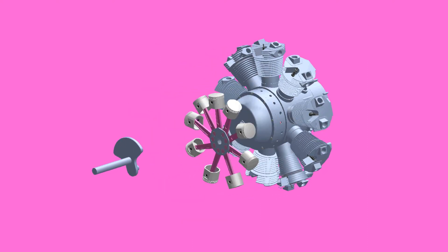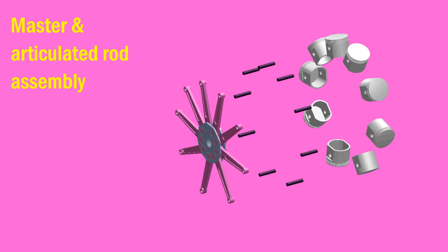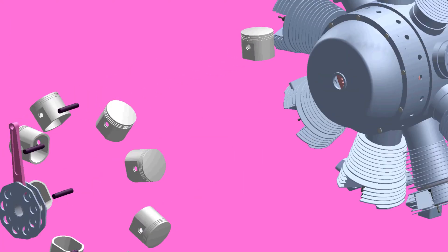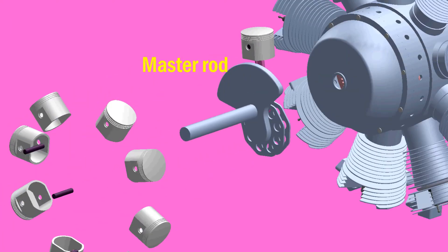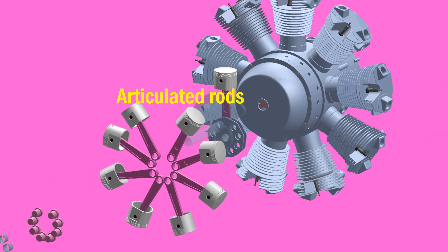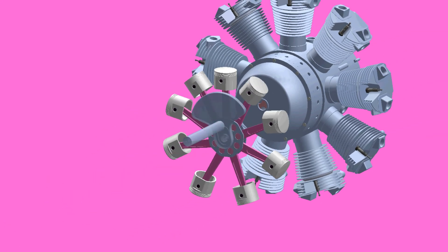The pistons are connected to the crankshaft with a master and articulated rod assembly. Piston 1 has a master rod with a direct attachment to the crankshaft. The remaining pistons connect the articulating rods to the master rod.